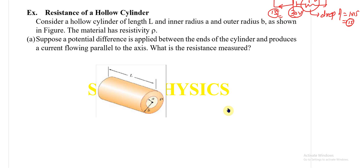This is a wonderful problem where we will calculate the resistance of a hollow cylinder. The data given is: a hollow cylinder of length L, inner radius a, outer radius b, as shown in the diagram, and the resistivity of the material is ρ. A potential difference is applied across the ends of the cylinder — across this end point and that end point.